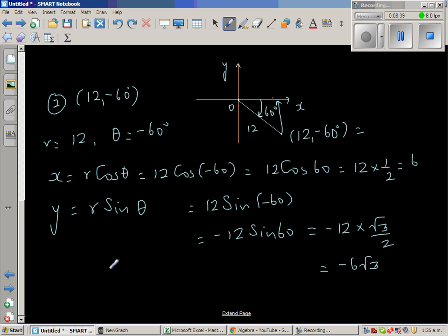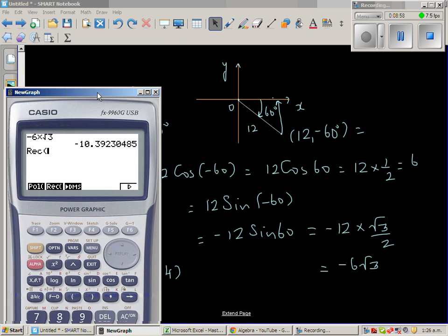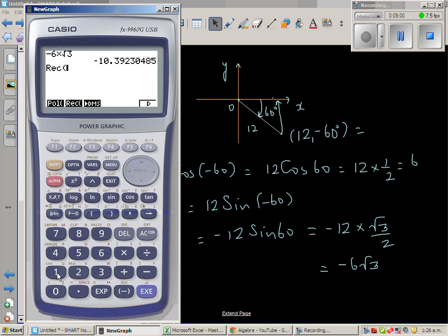First, this is -6 times √3, which is -10.4. So you can say your x is 6 and your y is -10.4 in 1 decimal place. So how will you do it on the calculator? Option, F6, F5, F6, F2. And the coordinates were (12, -60°), which is 6 and 10.39 or 10.4.